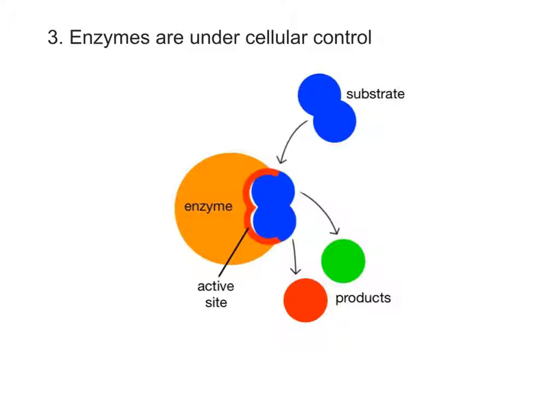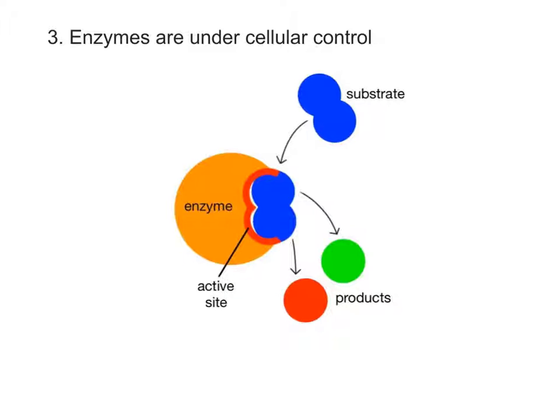The third property of enzymes is that their concentration and reaction rate are under cellular control through genes and the cell's chemical environment. Most enzymes come in two flavors, an active and inactive form. Chemicals inside the cell are used to turn enzymes on or off. These chemicals, called activators and inhibitors, are analogous to how we use a light switch to turn lights in a room on or off.